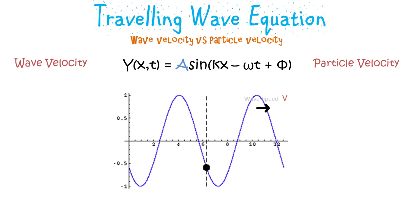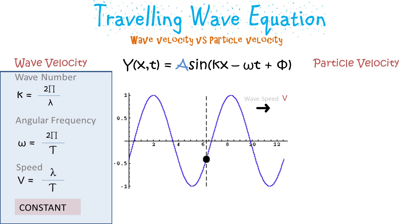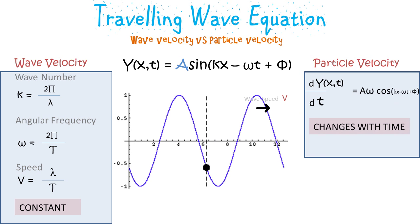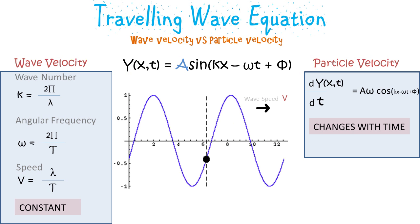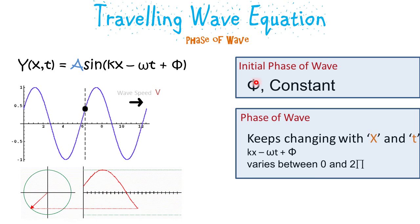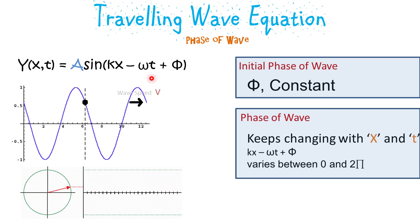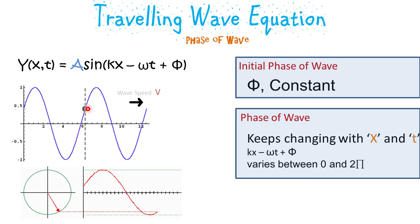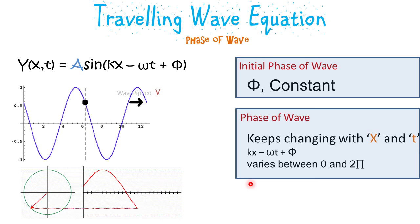Wave velocity versus particle velocity is an important concept. Wave velocity is constant and depends upon the values of k and omega. Particle velocity can be found by taking the differential of y with respect to time, and it keeps changing with time. Another important concept is the phase of a wave: the initial phase is constant at t equal to zero and x equal to zero, but the phase is dependent on x and t. The particle at position x keeps changing its y-position based on time, so the phase keeps changing with time and its value varies between 0 and 2π.